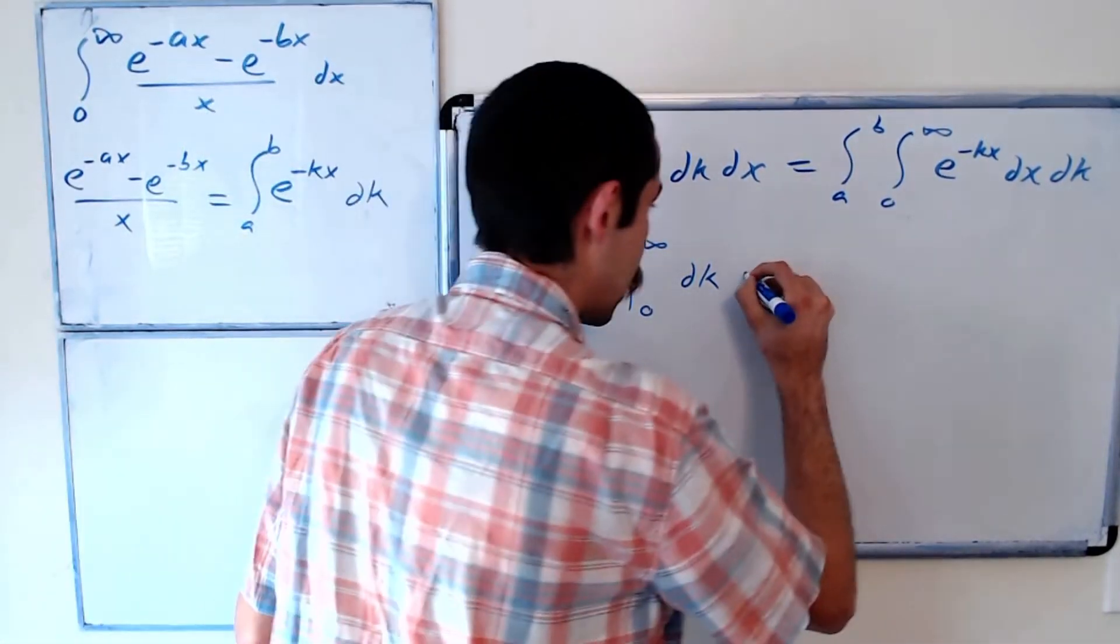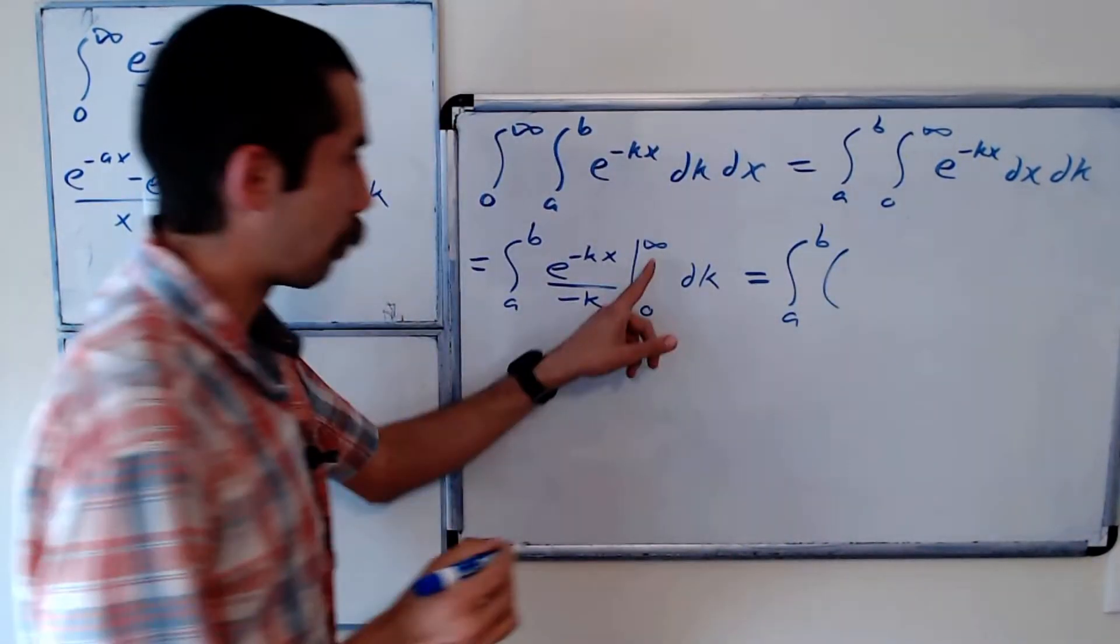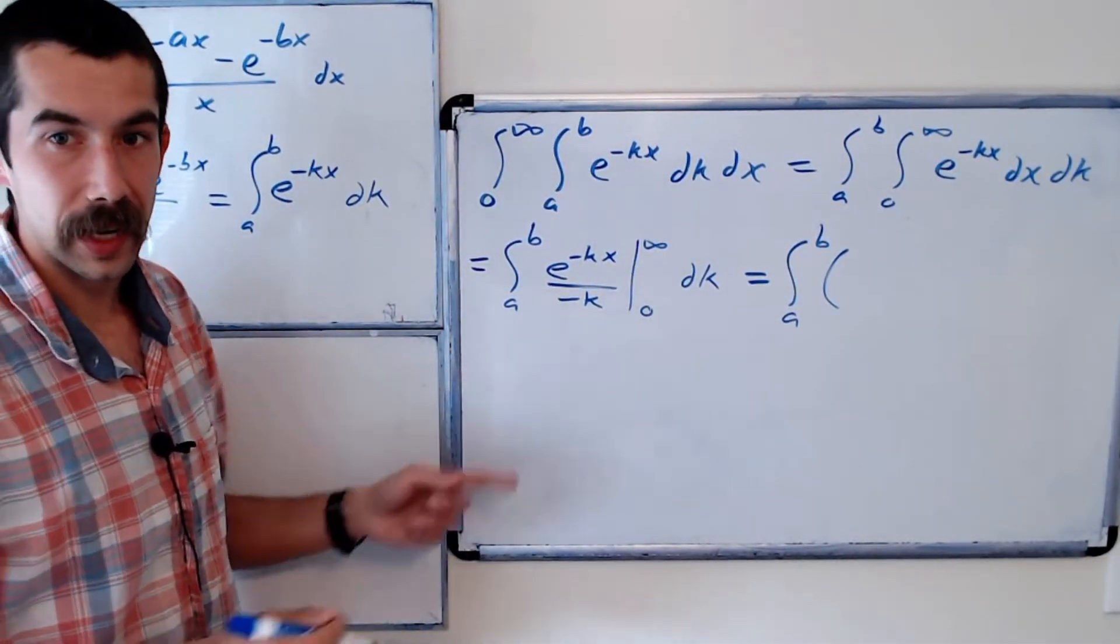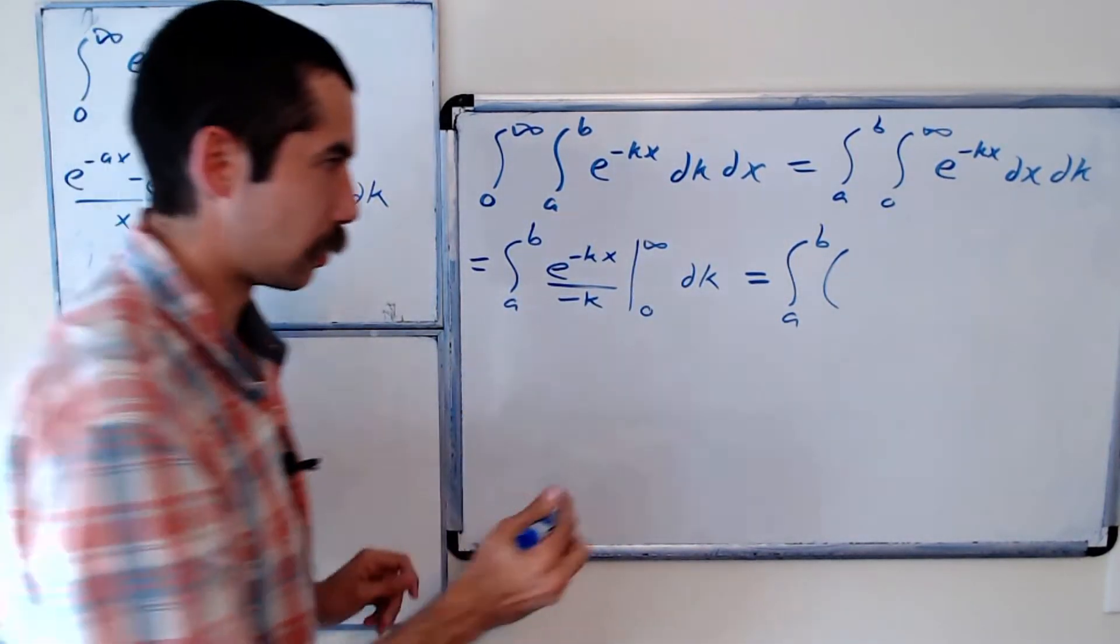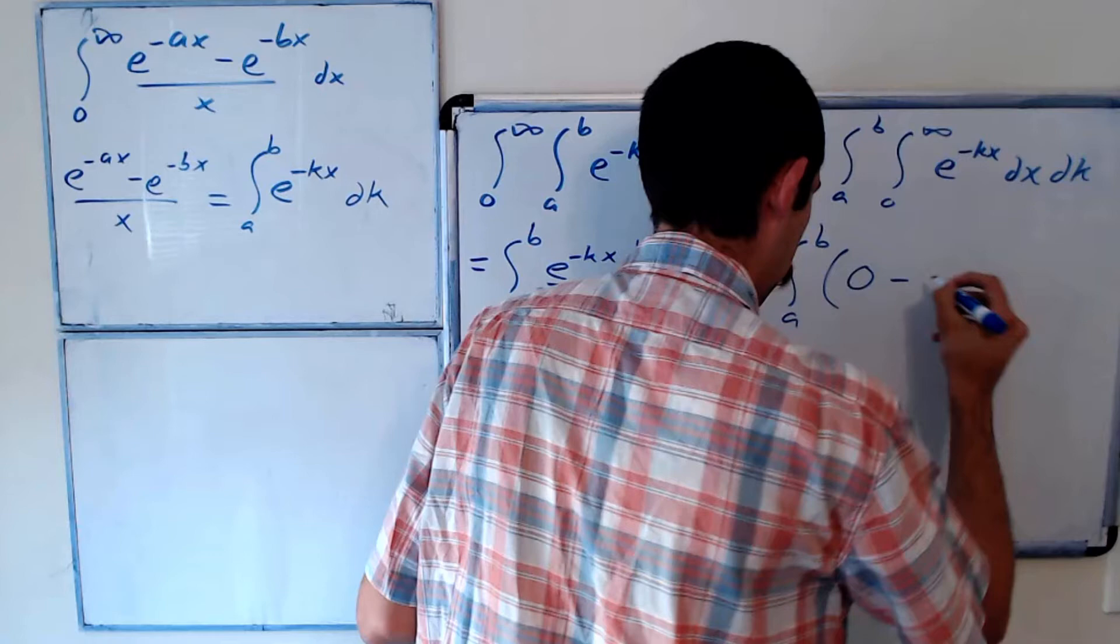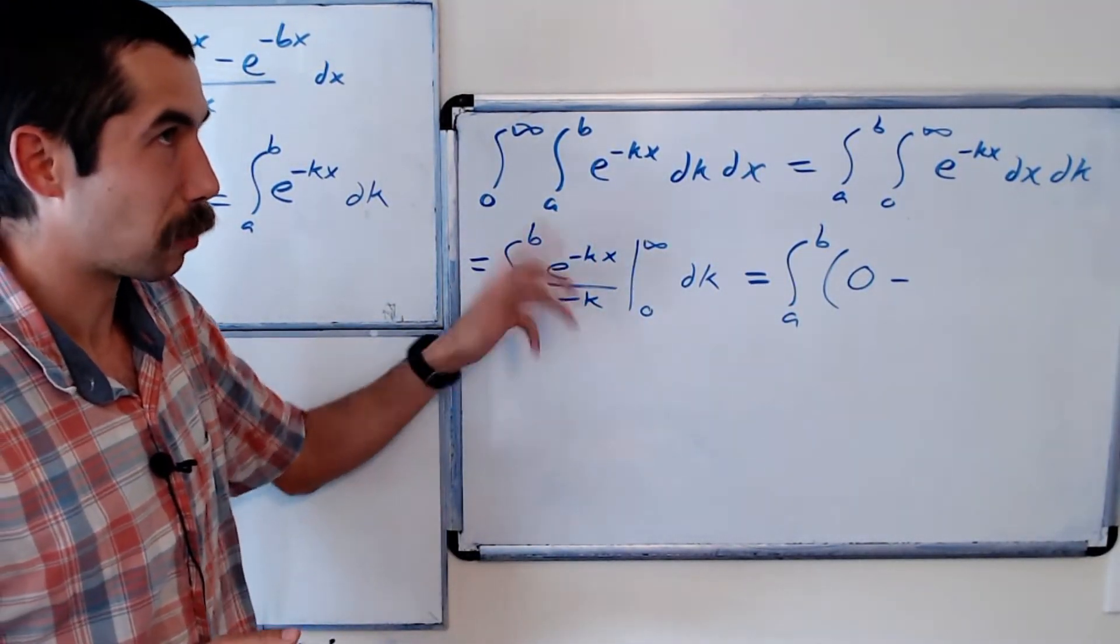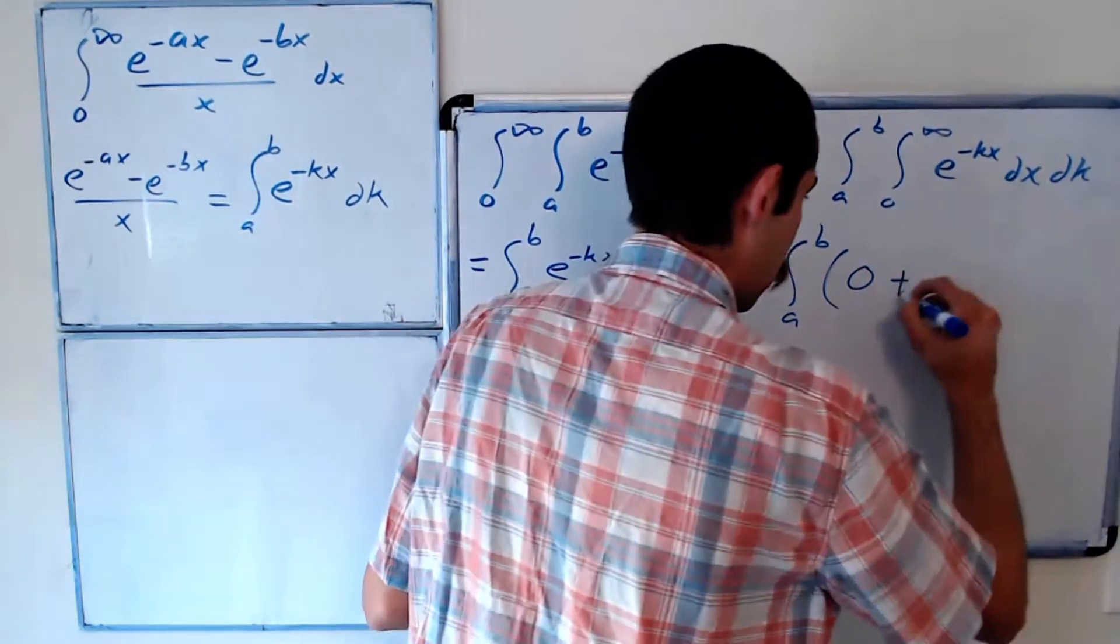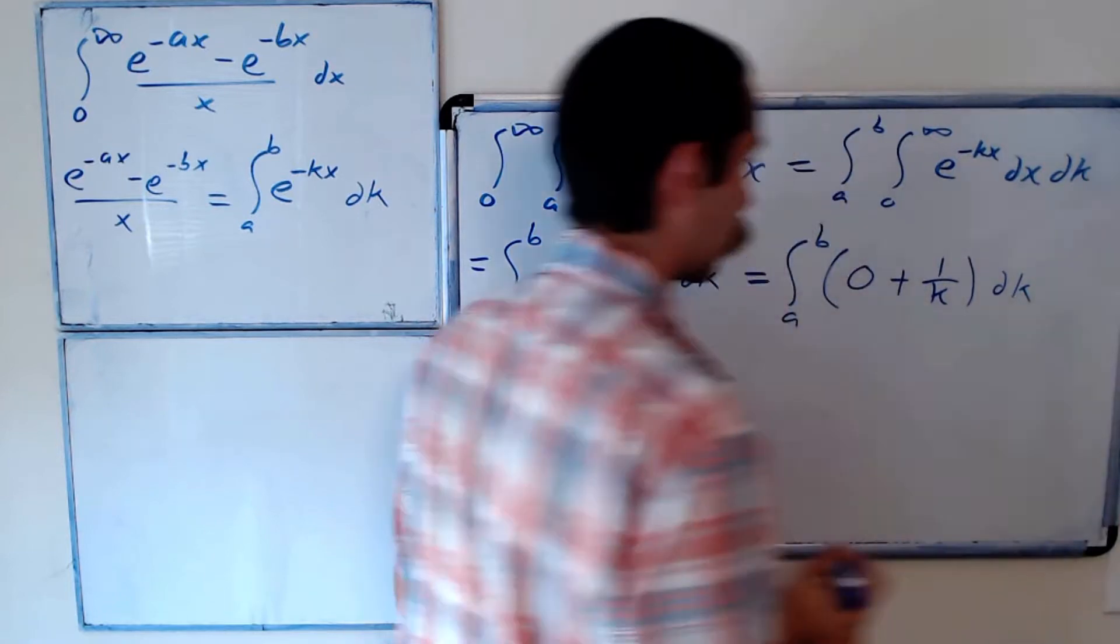Right, and that's equal to the integral from a to b of—when we plug in infinity we get e to the negative infinity over negative k, so 0—minus, well when we plug in 0 we get 1 over negative k, so minus 1 over negative k, plus 1 over k, dk.